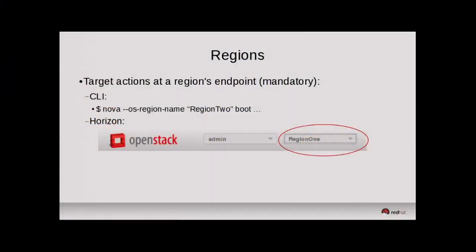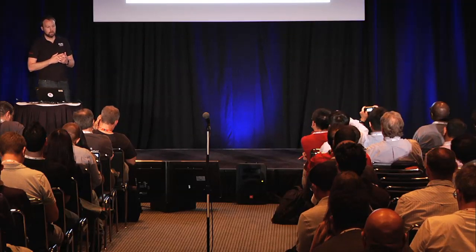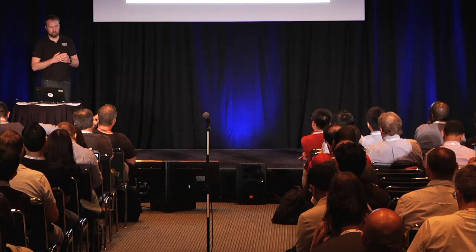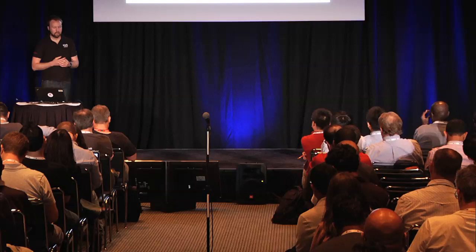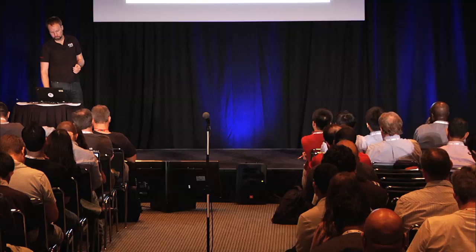I like to differentiate between these mechanisms in terms of whether they're explicitly or implicitly user-targetable, and whether that targeting is mandatory. With regions, every time I run a command against a cloud that has regions defined, I need to specify what region I'm interacting with. The concept of regions exists above the Nova scheduler — there's no concept of Nova choosing which region to run things in for you. The user has to specify, either via command line option or via the dropdown in Horizon.